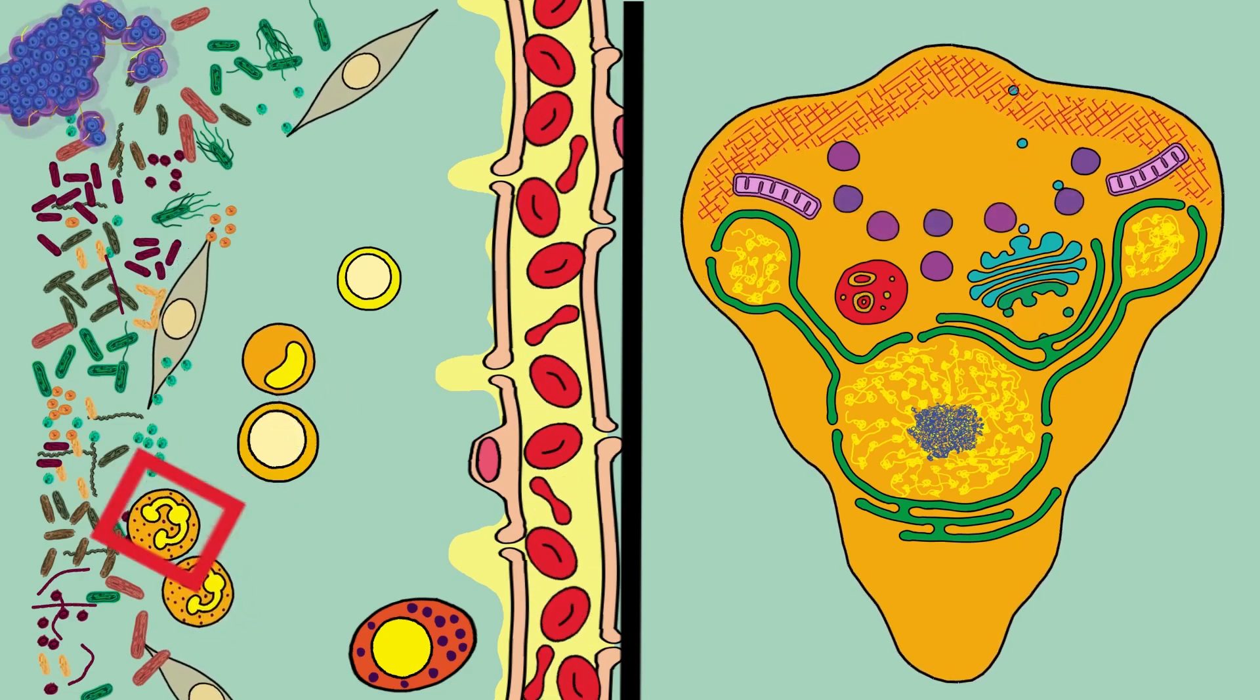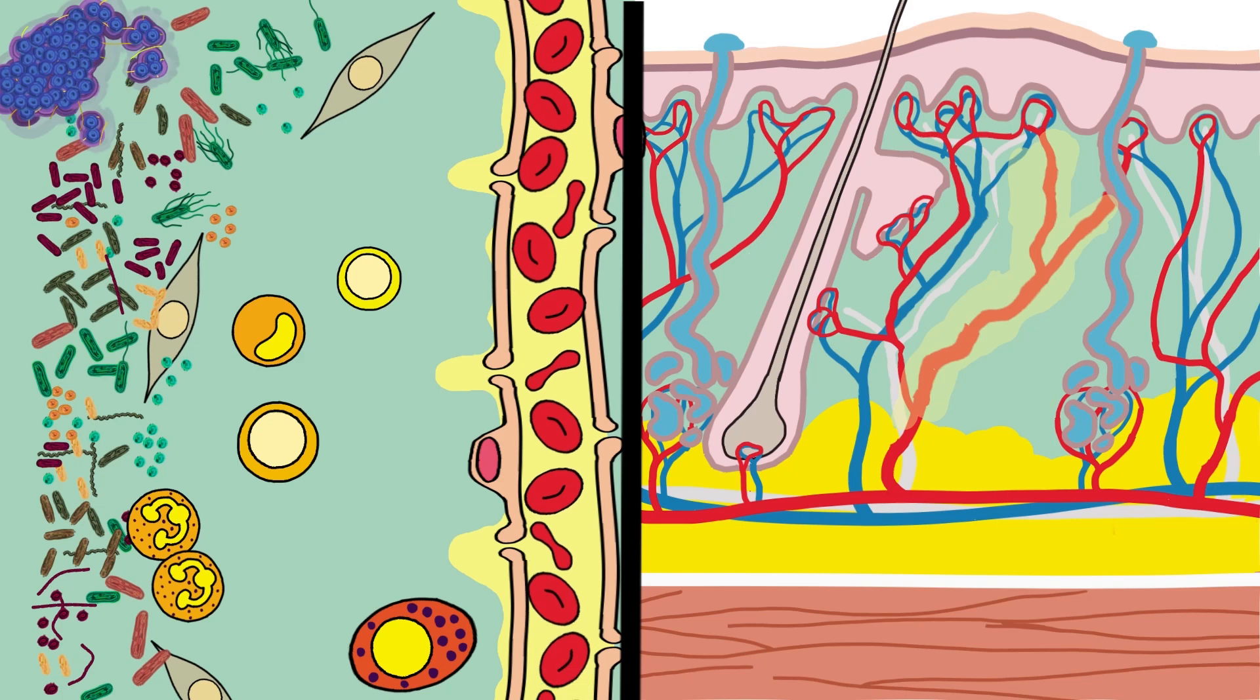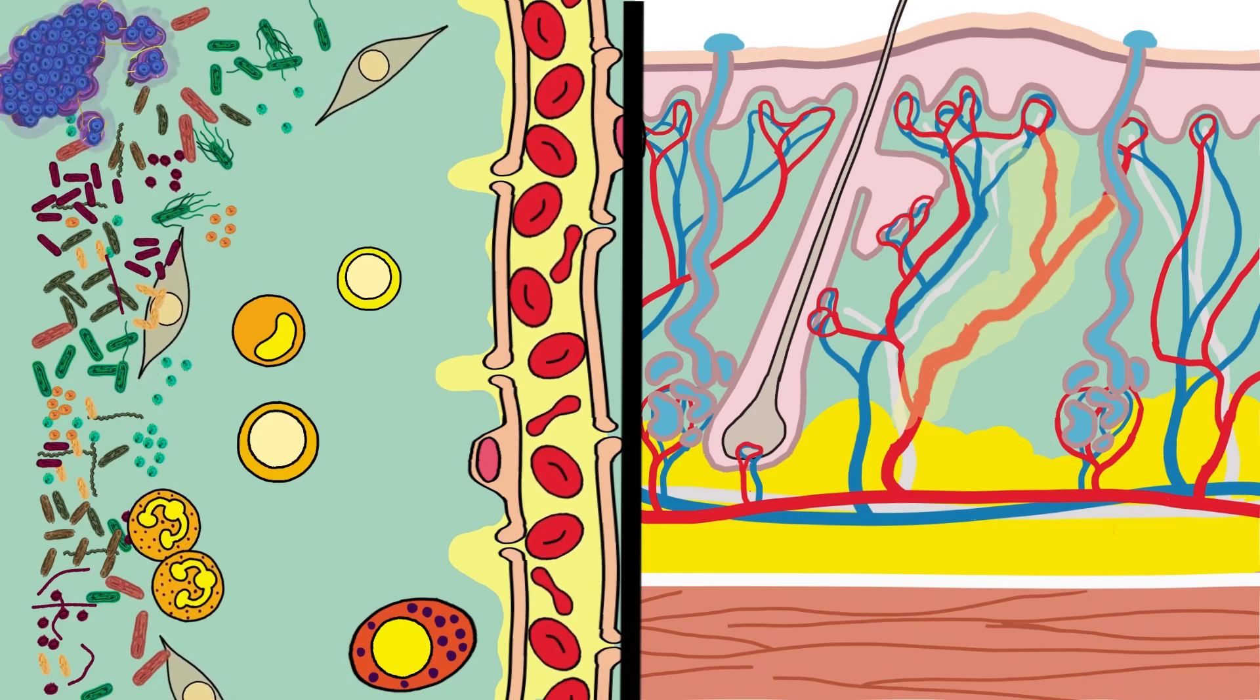But the number of bacteria is overwhelming. The neutrophils and monocytes can't manage to eat them all.